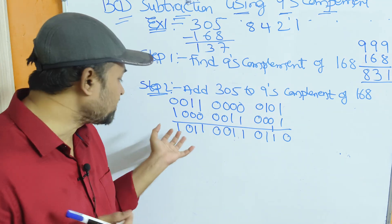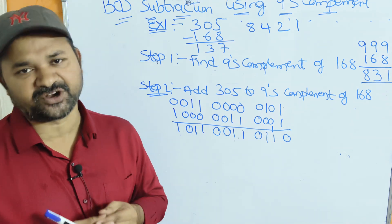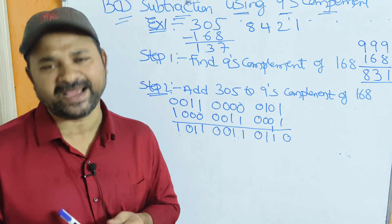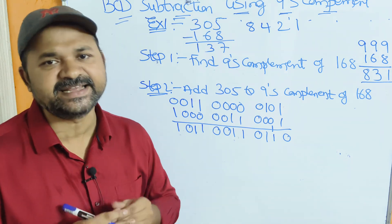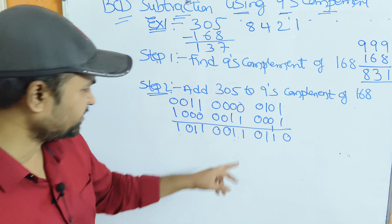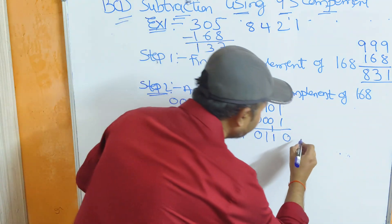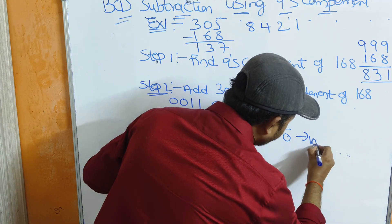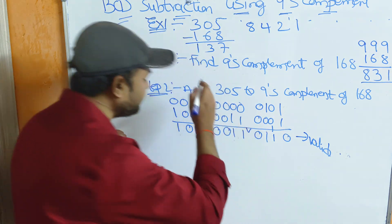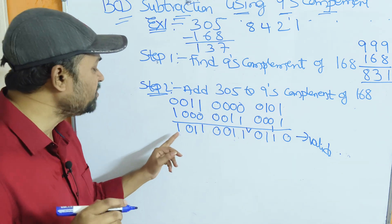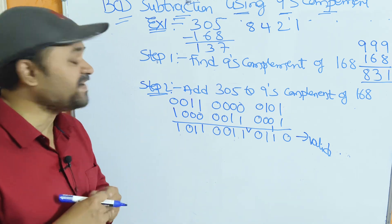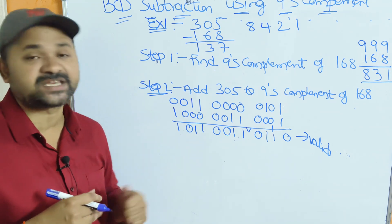Next, Step 3: check whether the result is in BCD notation or not. BCD notation means we have 10 digits from 0 to 9. If the resultant BCD digit is greater than 9, we have to add 6 for error correction. The first group 0110 is a valid BCD digit. The second group 00011 is also valid. The third group 1011 in decimal is 8+2+1 equals 11, so this is invalid — we have to add 6 for error correction.